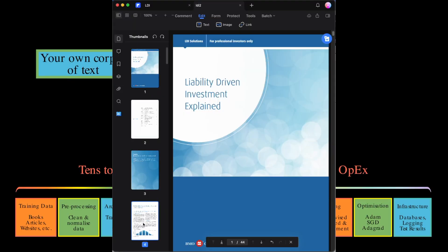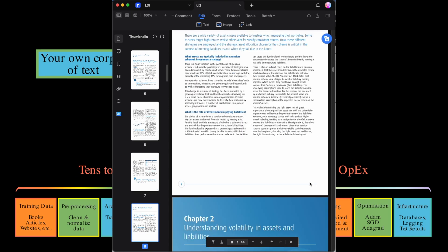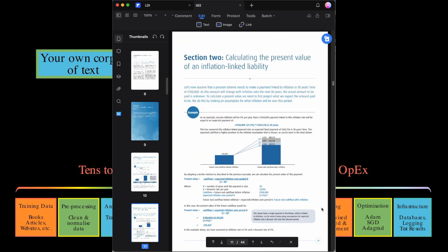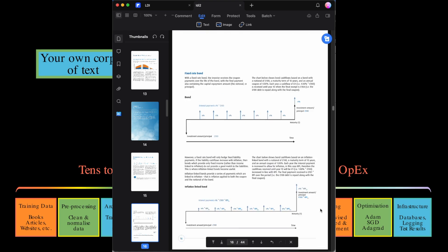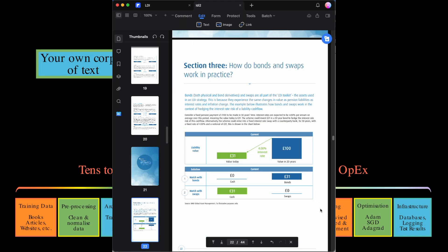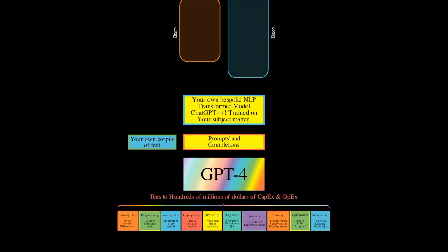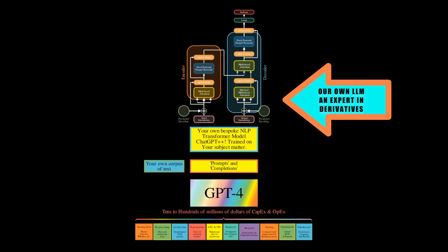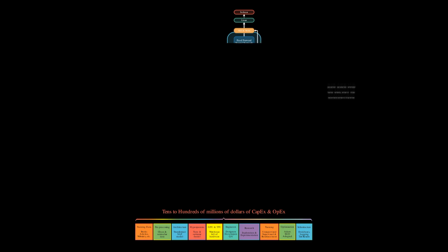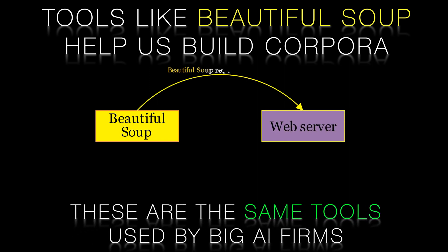Here's one such example — a Bank of Montreal piece on liability-driven investment. We can see what I hope by now are familiar concepts, such as the shape of liabilities, the present value of those liabilities based on interest rates, the impact of inflation, gilt and linker valuation, and crucially, how to use derivatives to match liabilities by hedging interest rates and inflation. This is just one of many such documents that we can use to build our fine-tuning corpus. We can build this manually should we wish, but it's far more efficient to use tools such as Beautiful Soup or Selenium to build these corpora programmatically.